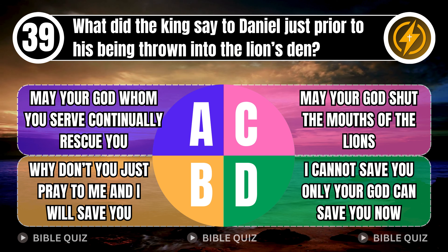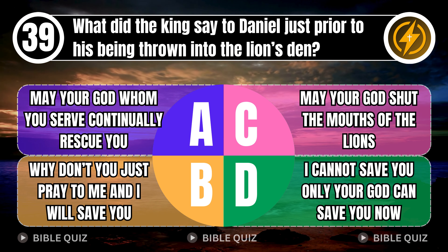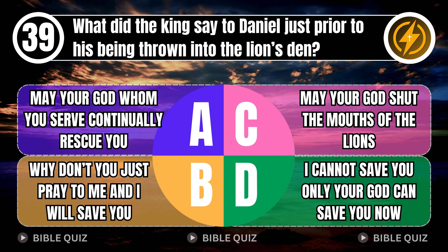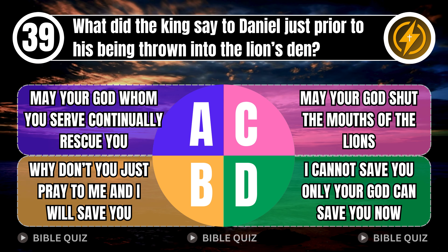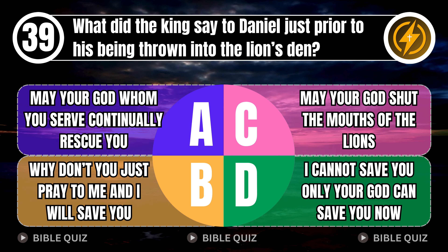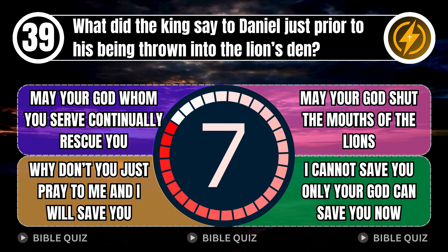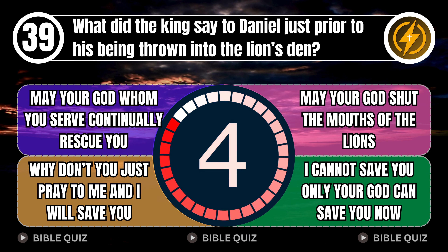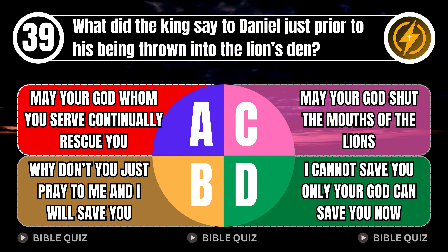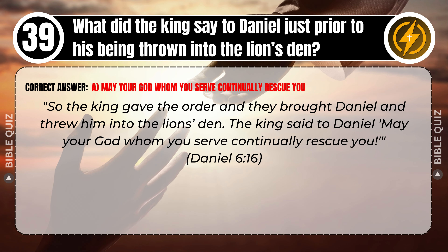Question 39: What did the king say to Daniel just prior to his being thrown into the lion's den? A. 'May your god, whom you serve continually, rescue you.' B. 'Why don't you just pray to me and I will save you.' C. 'May your god shut the mouths of the lions.' D. 'I cannot save you, only your god can save you now.' Correct answer: A. 'May your god, whom you serve continually, rescue you.' The king gave the order, and they brought Daniel and threw him into the lion's den. The king said to Daniel, 'May your god, whom you serve continually, rescue you.' Daniel 6 verse 16.